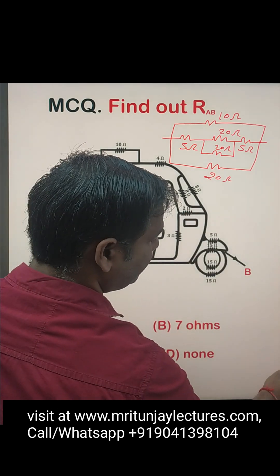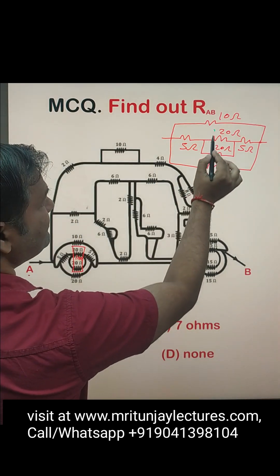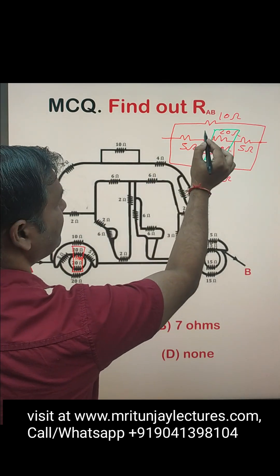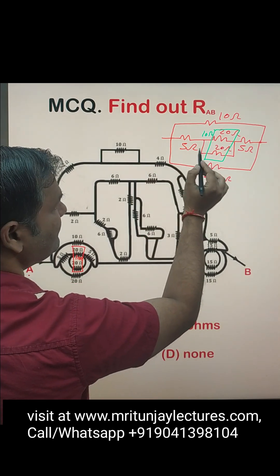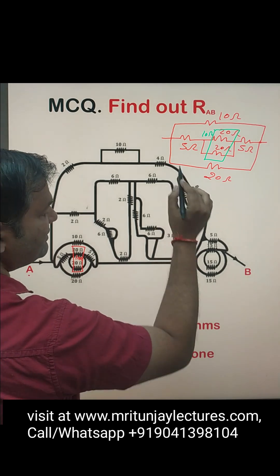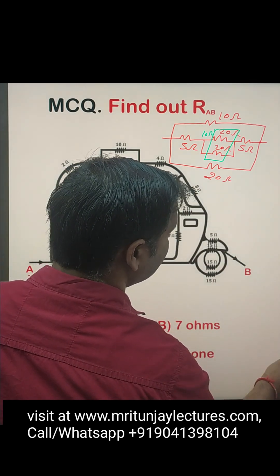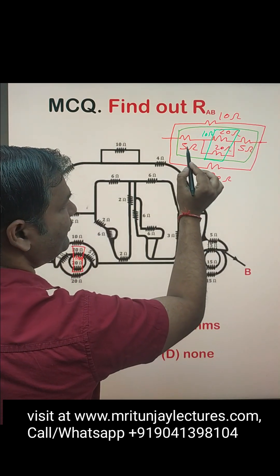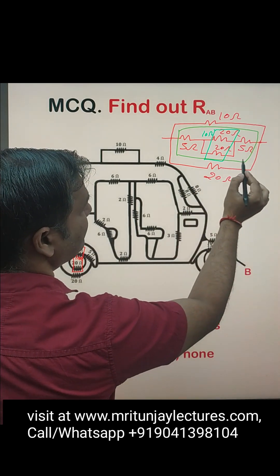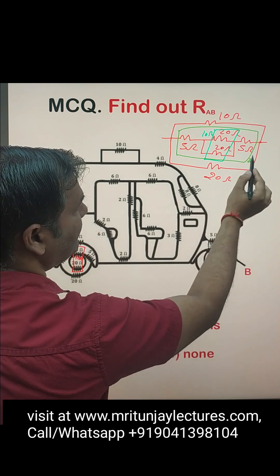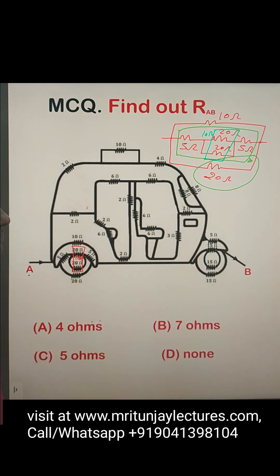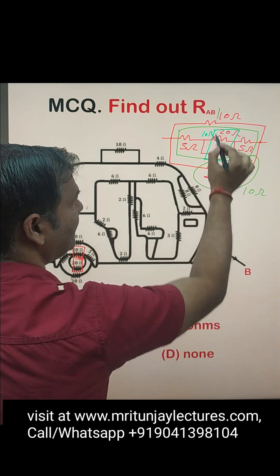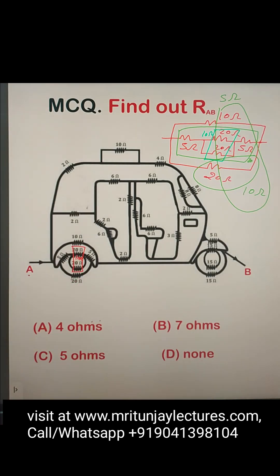Looking carefully, the combination of the two 20Ω resistors in parallel gives 10Ω. Then 10Ω, 5Ω, and 5Ω in series gives a combination of 10 + 5 + 5 = 20Ω. That 20Ω and another 20Ω are also in parallel, giving 10Ω. And that 10Ω and 10Ω in parallel gives 5Ω.